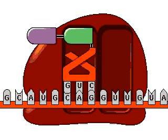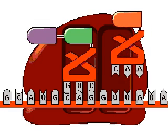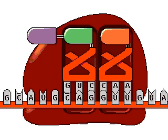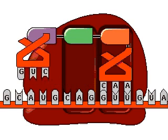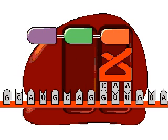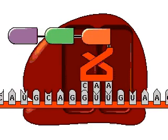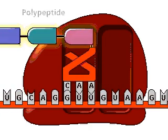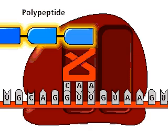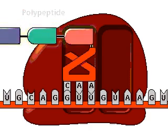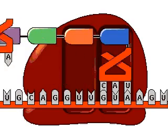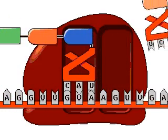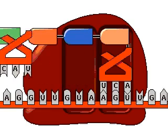The third codon is recognized by the anticodon of a third tRNA carrying an amino acid. The dipeptide is now transferred to the third amino acid, freeing the second tRNA. Because more than two amino acids are now linked by peptide bonds, the growing chain is called a polypeptide. The process of adding amino acids is repeated many times during translation as the ribosome moves toward the three prime end of the mRNA.